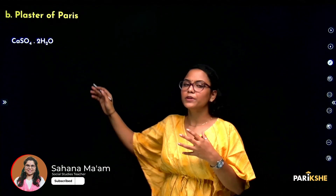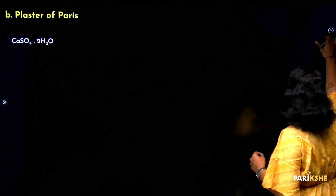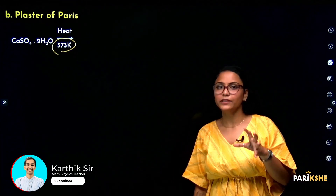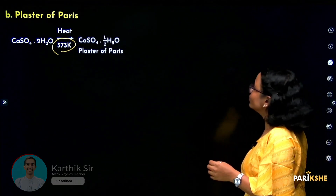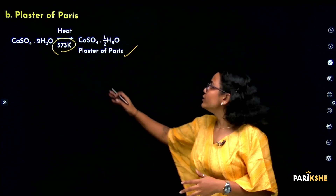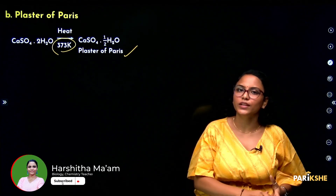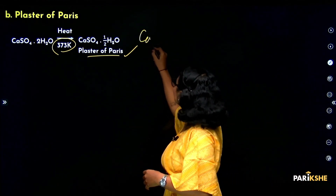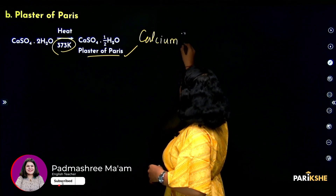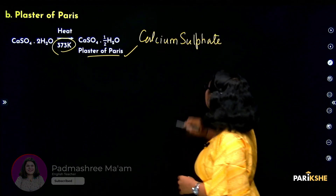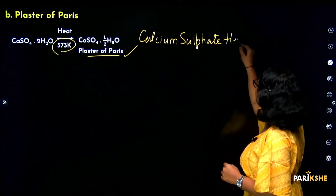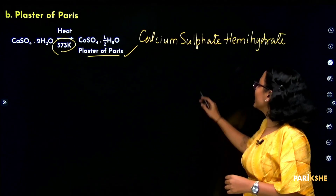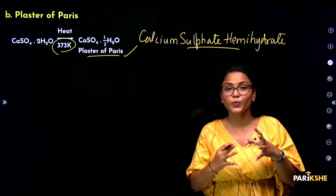If we heat calcium sulphate 2H₂O (gypsum) to 373 Kelvin, we get Plaster of Paris — calcium sulphate hemihydrate (CaSO₄·½H₂O).